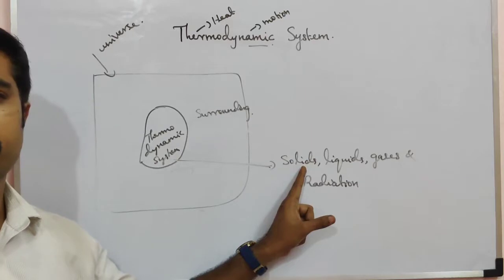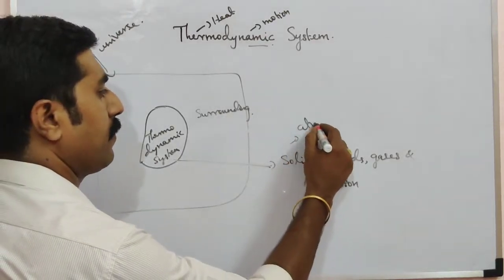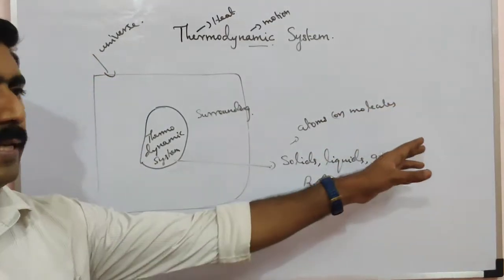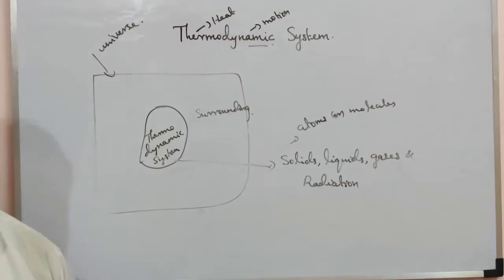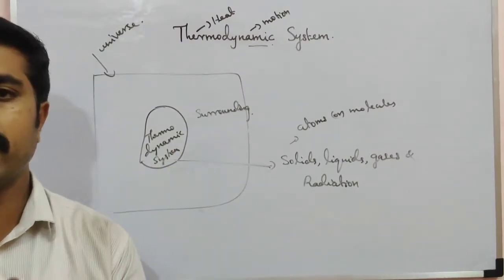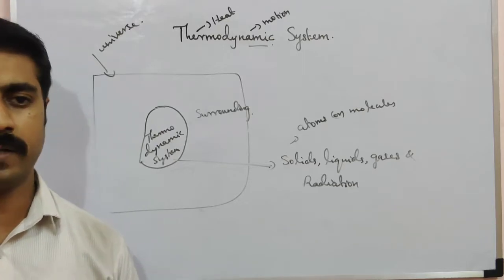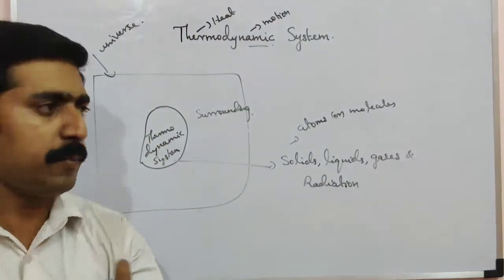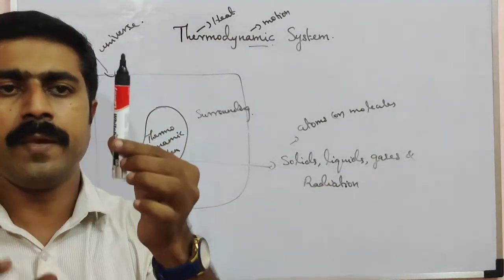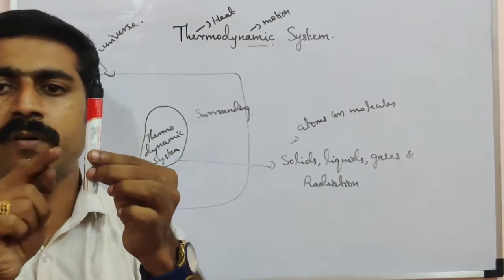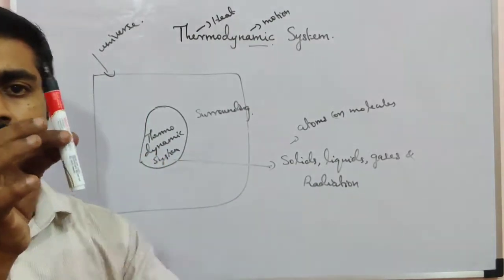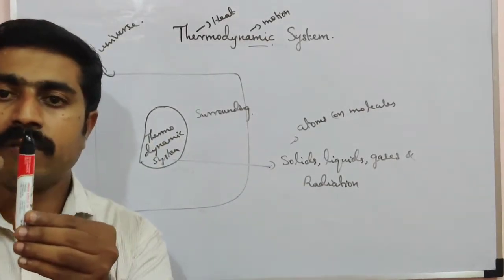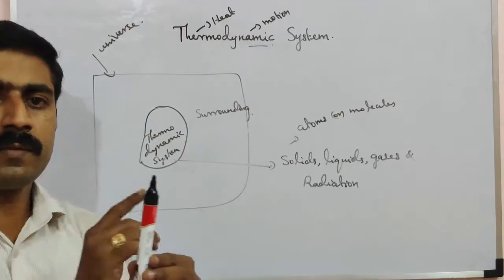Solids are made up of atoms or molecules. Liquids, gases, and radiation — all of them are made of atoms or molecules. So a thermodynamic system is a large number collection of particles.